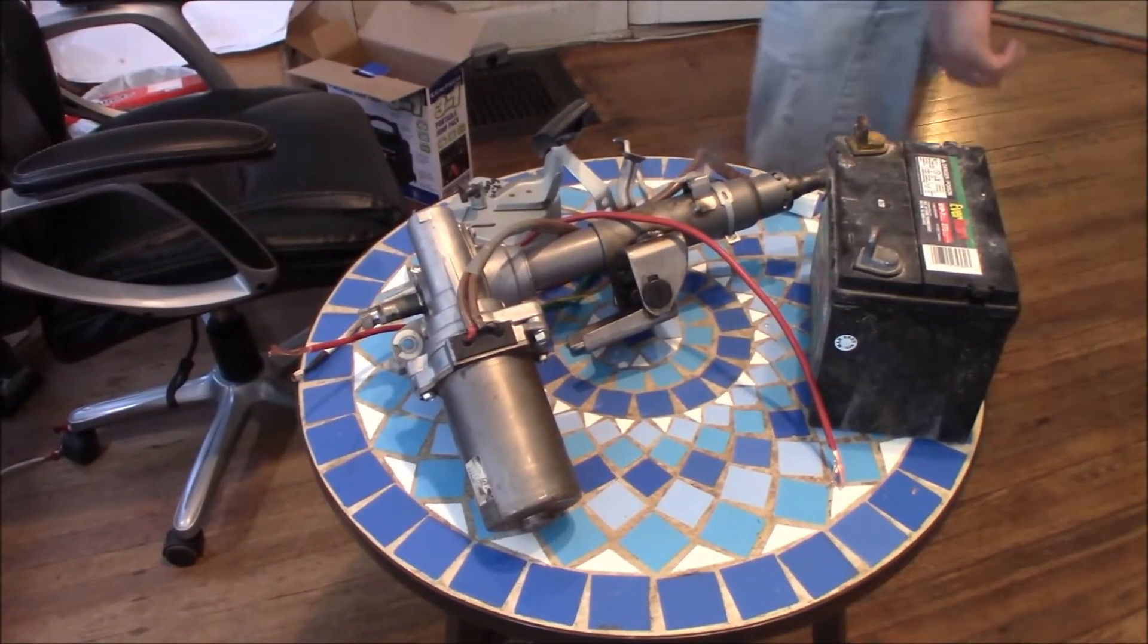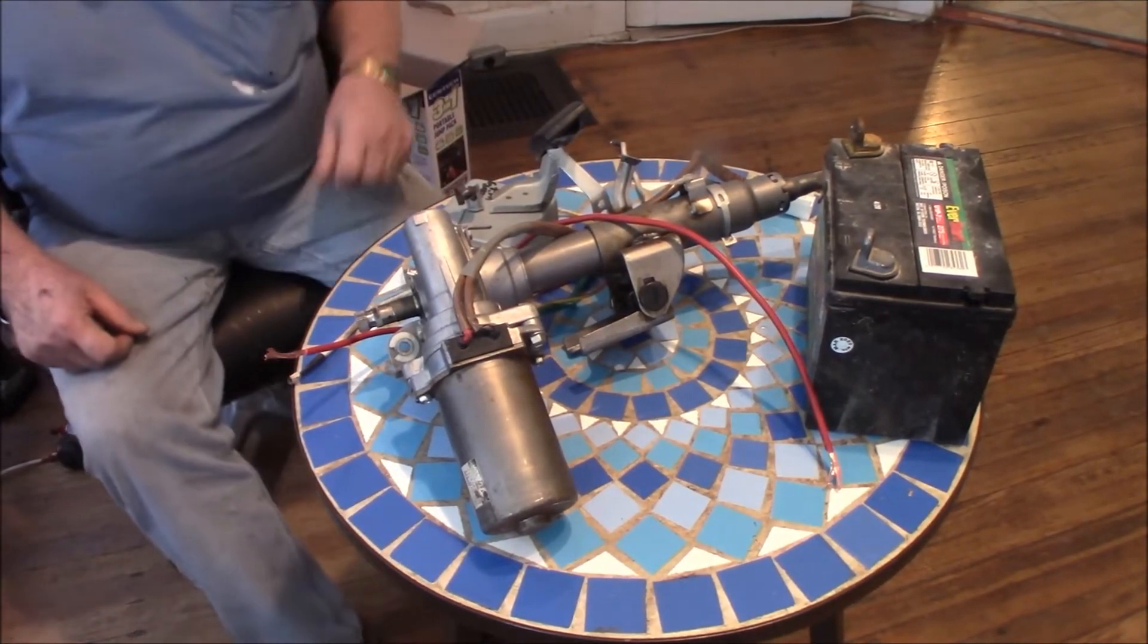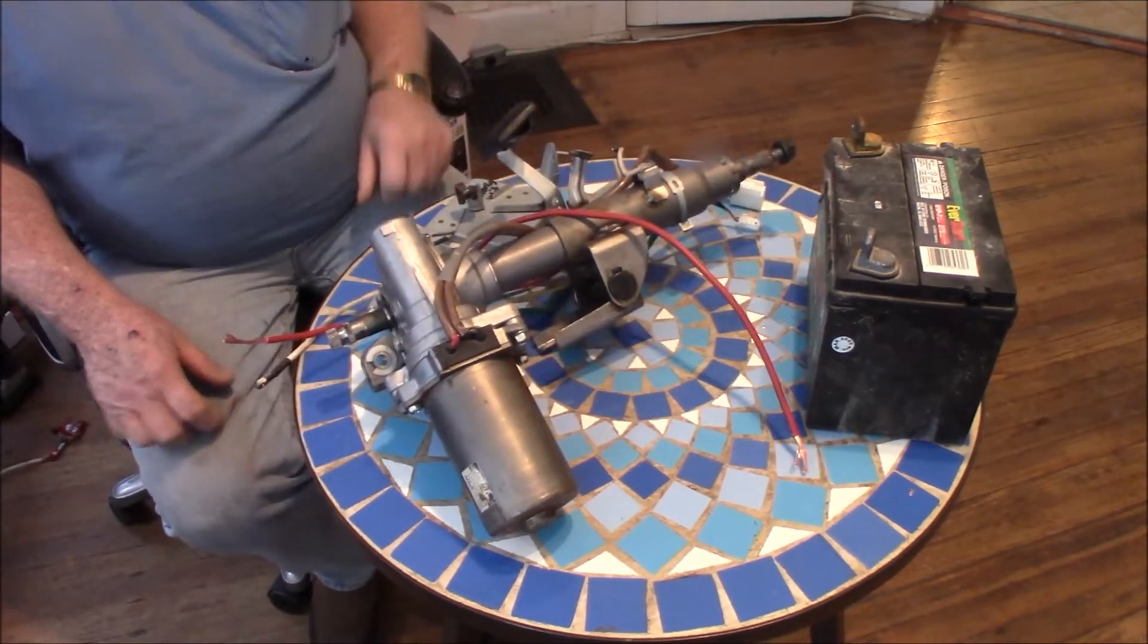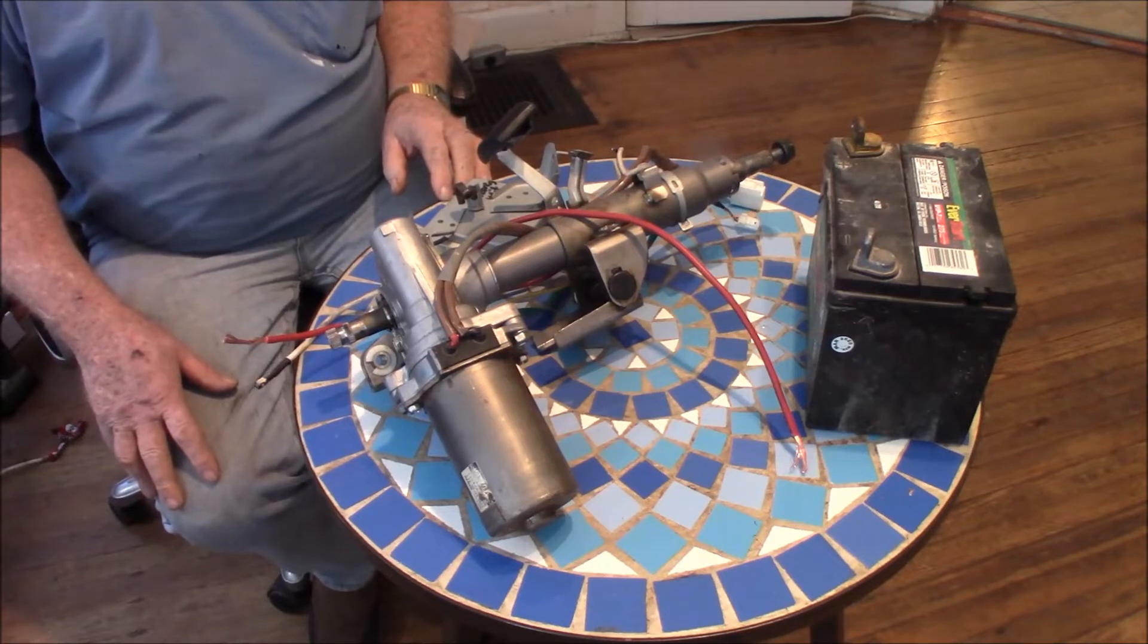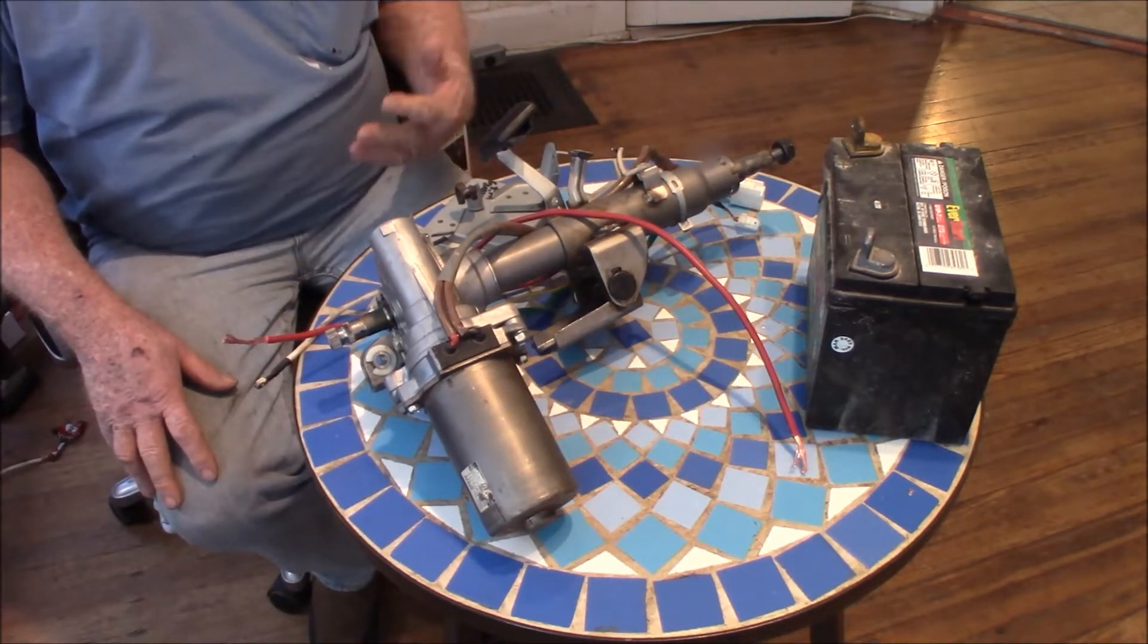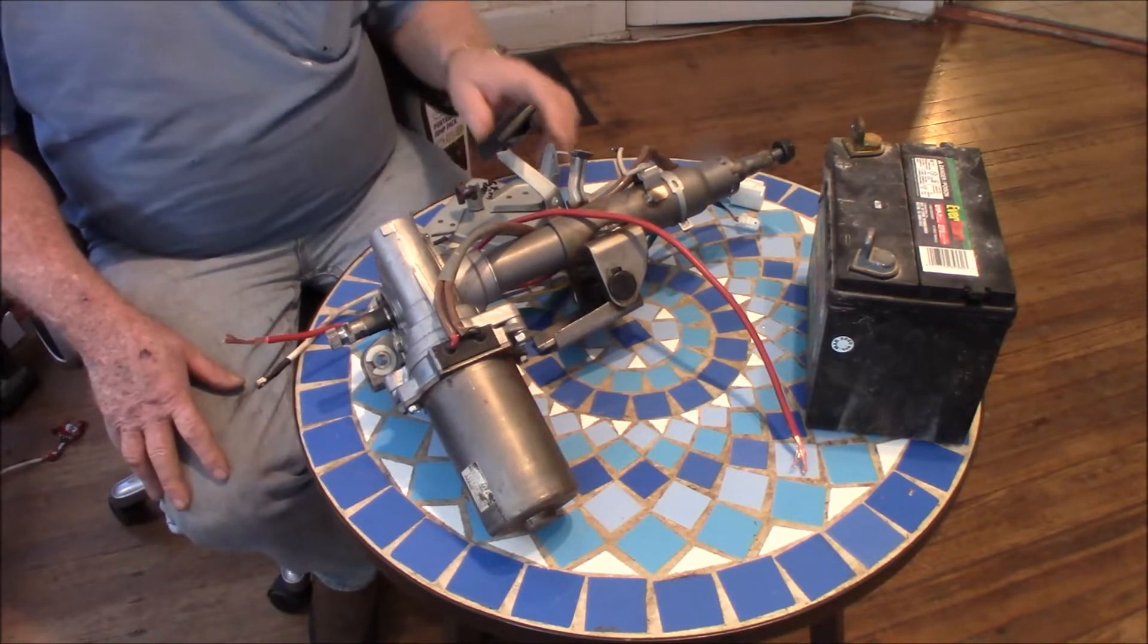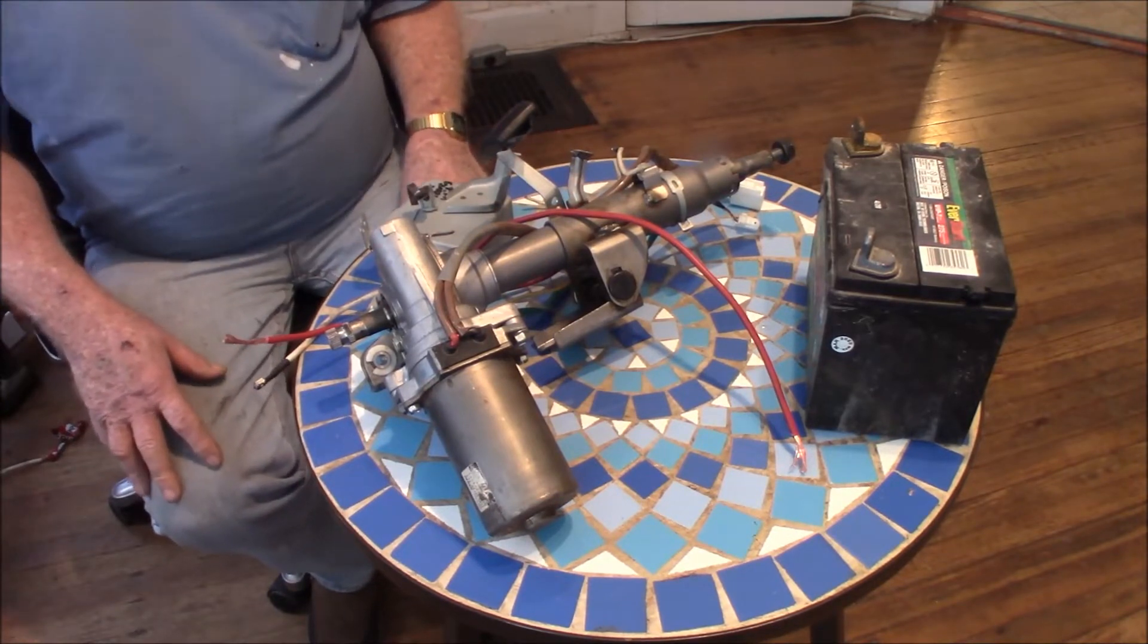What this is is an electric power steering unit out of a little 2007 Prius. My idea was to hook this up on my little tractor because it's pretty hard to steer. I got this one off a guy that had to part one of these, but for some reason it doesn't work the way it should.